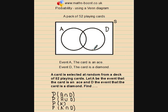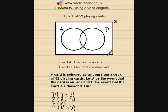Contained within the sample space are closed curves representing event A — that the card drawn is an Ace. There are four outcomes associated with this event: the Ace of Spades, the Ace of Clubs, the Ace of Diamonds, and the Ace of Hearts. Event D is represented by another closed curve and contains 13 outcomes, because there are 13 diamond cards in the pack.